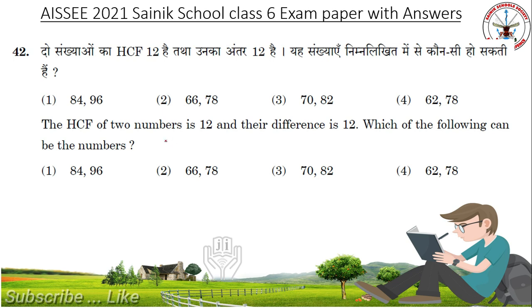The HCF of two numbers is 12 and the difference is 12. Which of the following can be the numbers? Answer is 84 and 96.